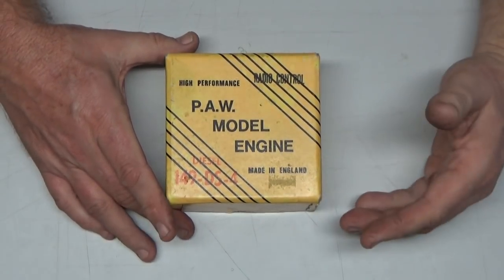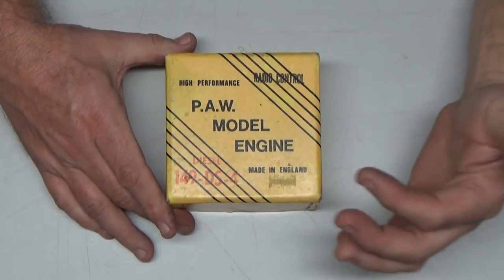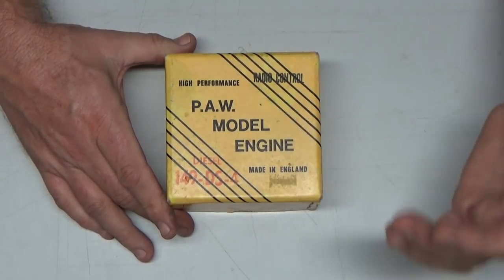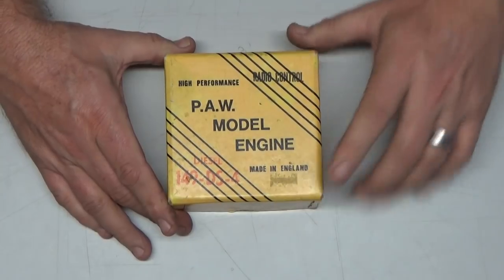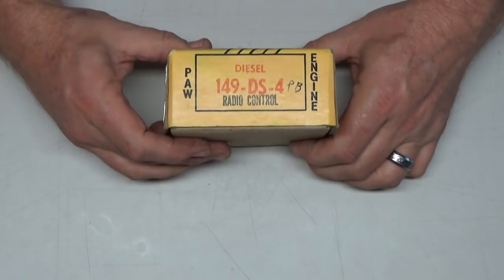This is a Precision Arrowworks 149DS-4. I don't know what all those numbers stand for, but it's a 1.49 cubic centimeter engine. Made in England. It says Radio Control here. I got the box and everything.